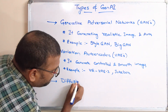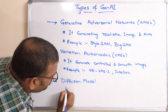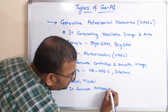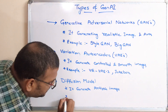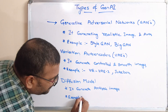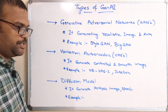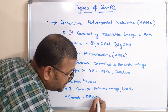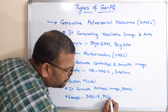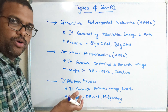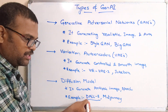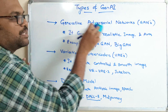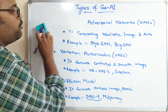The third type is the Diffusion Model. It is used to generate artistic images and also speech. Examples for this type are DALL-E, which we have seen in our previous session, and similarly Midjourney. These are all diffusion models. We have seen these tools used to generate artistic images.